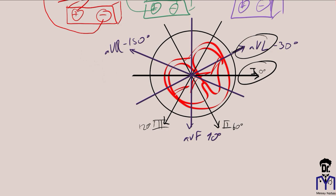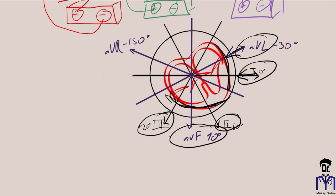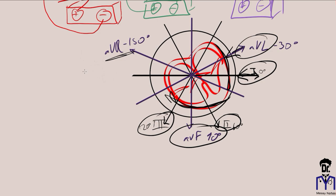Leads II, III, and AVF look at the apex — the inferior portion of the heart resting on the diaphragm. AVR is electrically opposite to Leads I, II, and AVL. You're beginning to understand that you don't need to memorize which lead is lateral or inferior — just think about it and you'll know.